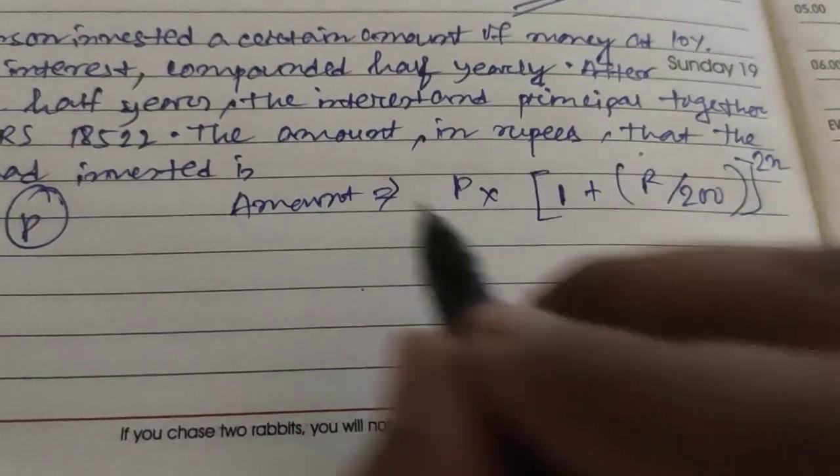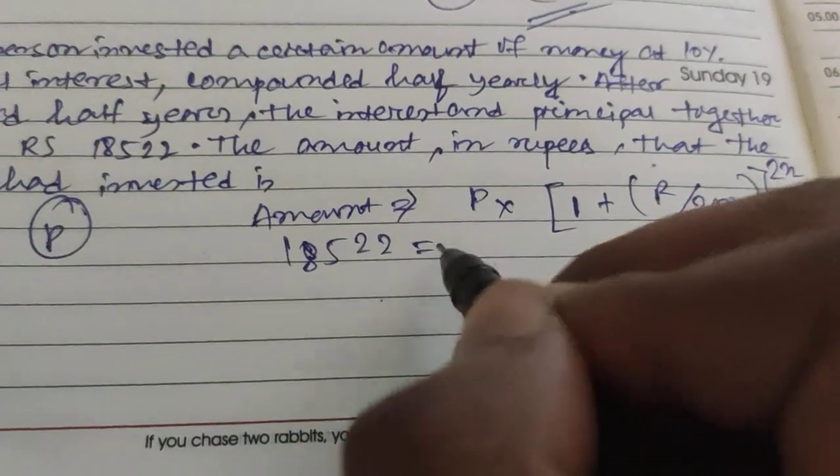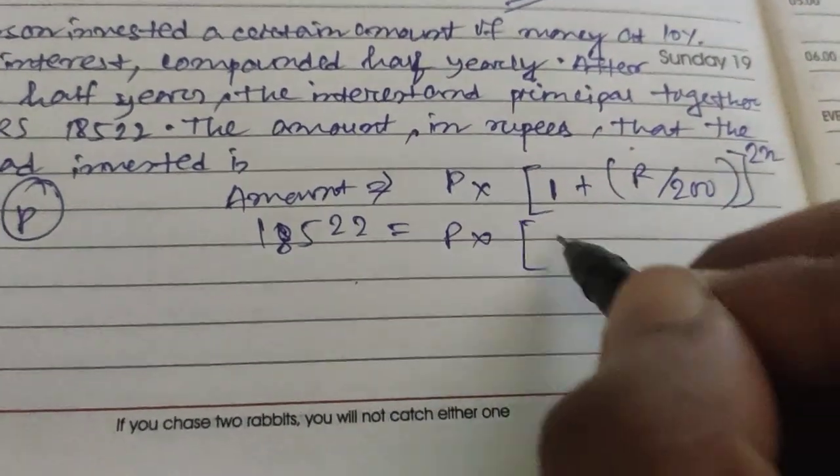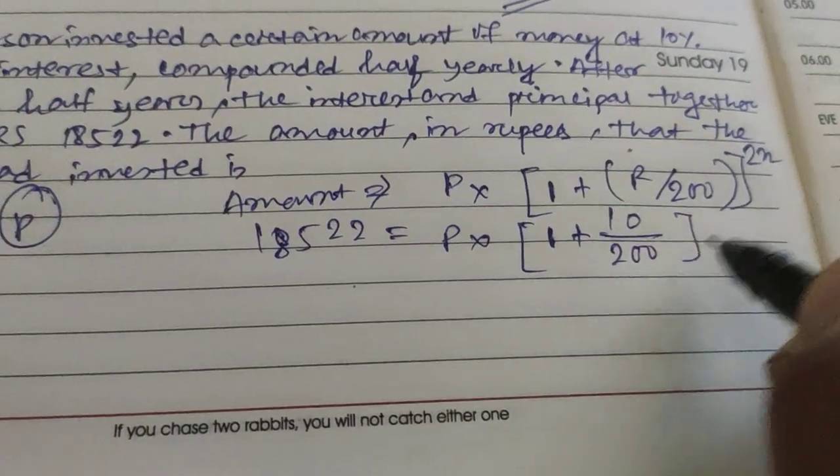So 18,522 equals P into 1 plus, the rate of interest is 10, so 10 by 200, whole to the power 2 into 1.5.